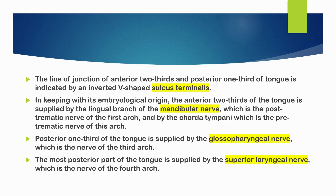The line of junction of the anterior two-thirds and posterior one-third of the tongue is indicated by an inverted V-shaped structure called the sulcus terminalis.